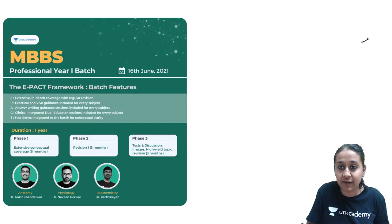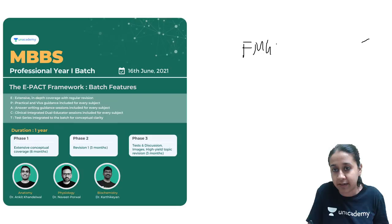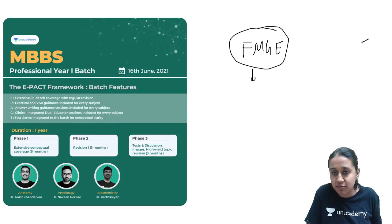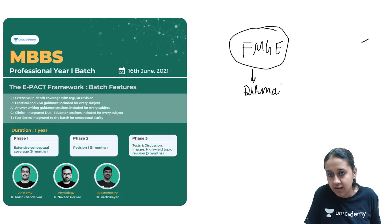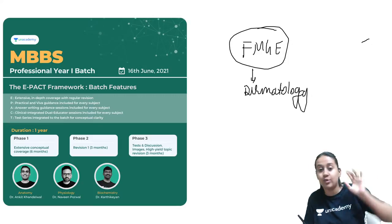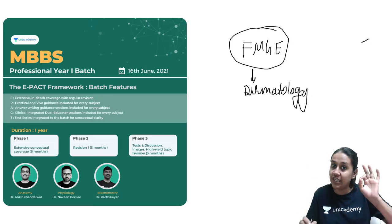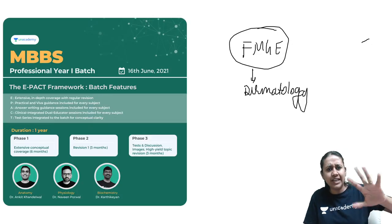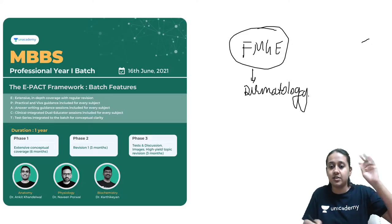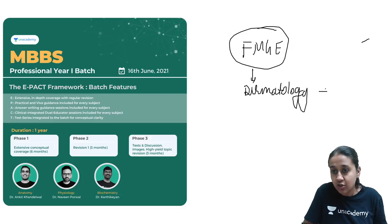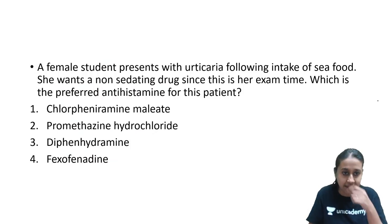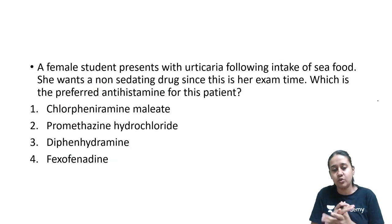In today's session we'll discuss the FMGE dermatology paper. For those who gave the FMGE exam — there are around 8 to 10 questions from dermatology, with 2 to 3 overlap questions from surgery and a few exclusively from dermatology. Let's discuss the June 2021 dermatology paper.